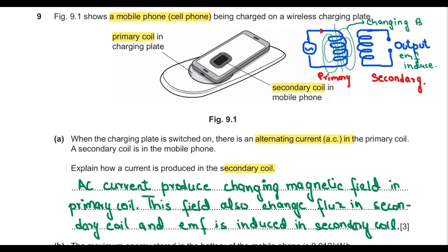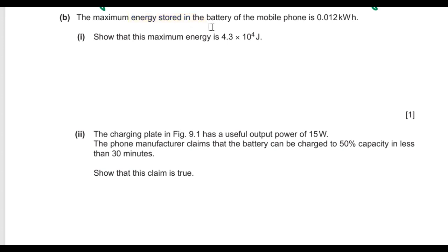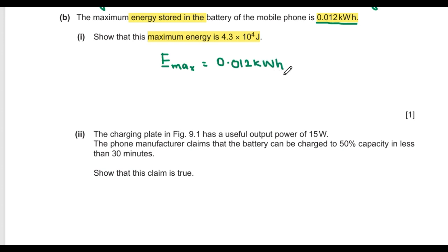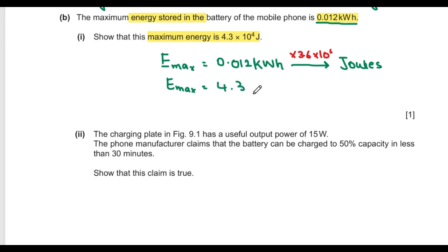Part B says the maximum energy stored in the battery is 0.012 kilowatt hours. Show that the maximum energy is 4.3 × 10⁴ joules. Converting from kilowatt hours to joules: multiply by 3.6 × 10⁶. So 0.012 × 3.6 × 10⁶ = 4.3 × 10⁴ joules.